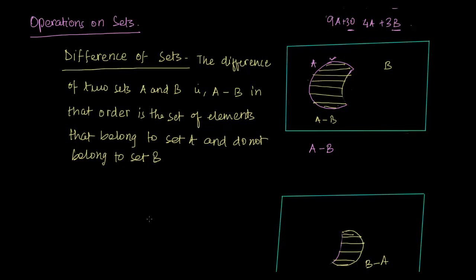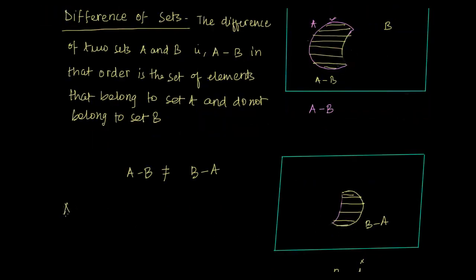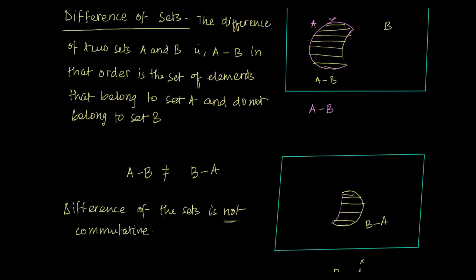So you'll find that subtraction is not commutative — A minus B is quite something else and B minus A is quite something else. They are not the same. So the difference of sets is not commutative. We have A minus B and they do not represent the same region.